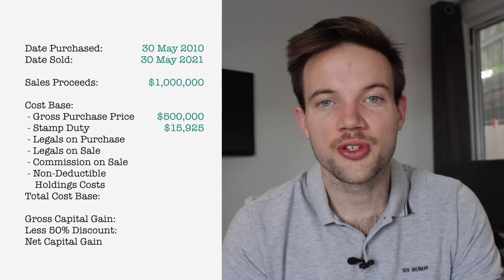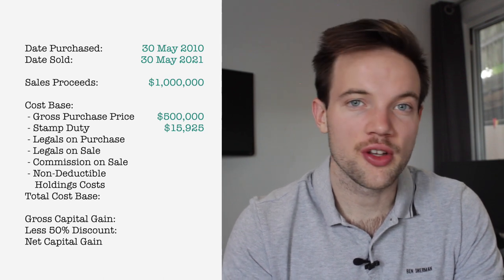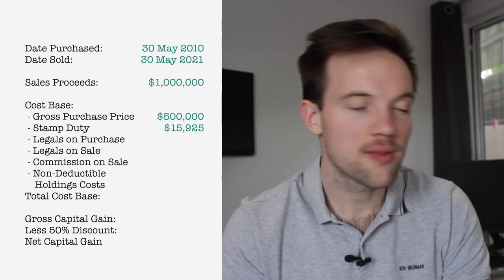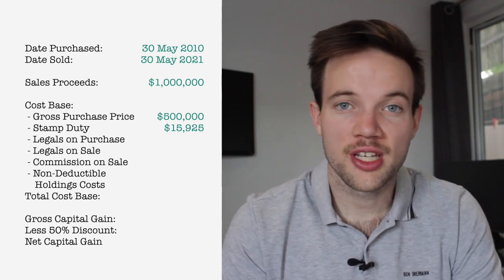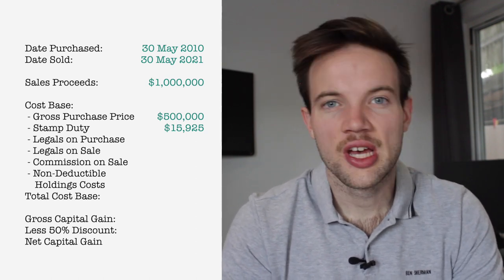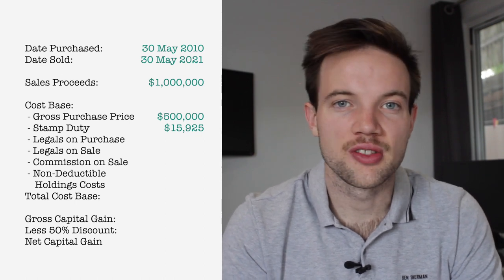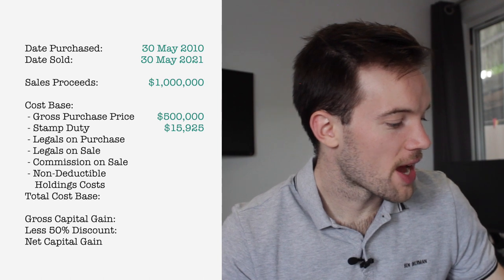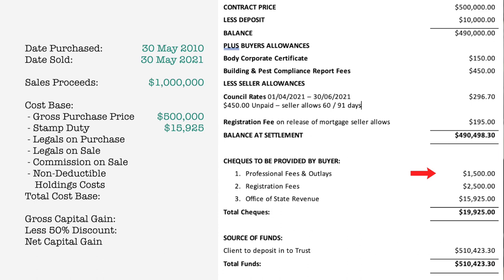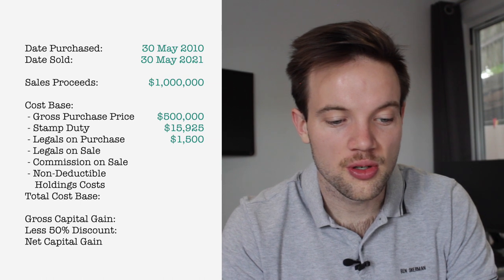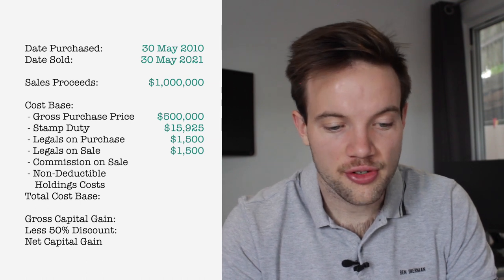Also included in the cost base are any legal fees on the purchase and legal fees on the sale. Looking at both settlement statements towards the bottom half, near the office of state revenue line, there's usually a cheque withdrawn by your lawyer before they pay out the funds. On the sale settlement statement we have the lawyer fees line, and on the purchase settlement statement we have professional fees and outlays — both entered into our calculator at $1,500 each.